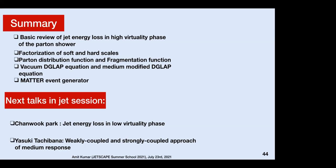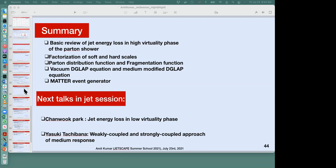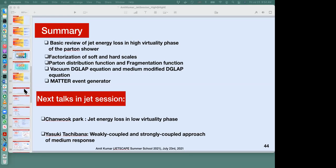Thank you — that was a very nice talk. I saw one hand but it disappeared. If you'd still like to ask your question, please go ahead. Thanks for this very nice talk. I'm new to this area, so I had a basic question: you defined different energy loss observables like Q-hat, E-hat, E2-hat — do they have any significance in terms of the processes they correspond to, like radiation or collisions?